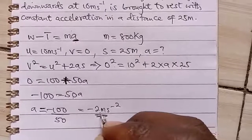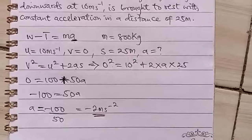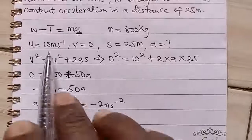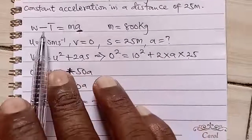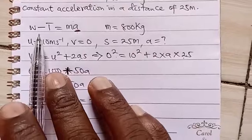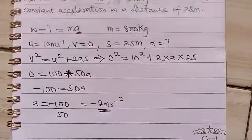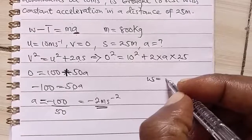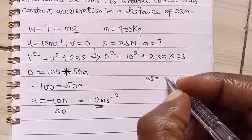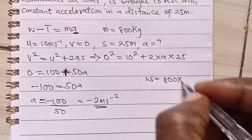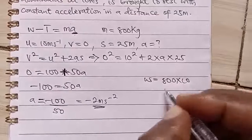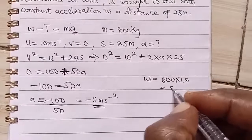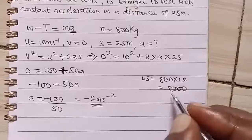we can now plug it in into the original equation that says W minus T. Our W is equal to mg. So for us to get W, we say that W is equal to our m, that's the mass, 800 times our g is 10. So this will give us about 8,000.